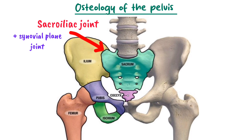The sacroiliac joint is held together by strong ligaments. The second landmark is the acetabulum, a deep concave structure that serves as the socket for the head of the femur, forming the ball and socket hip joint. The name acetabulum comes from Latin meaning 'vinegar cup.' In newborns, the acetabulum is formed by the ilium, ischium, and pubis, separated by the triradiate cartilage. Since cartilage does not appear on x-rays, it may look like a fracture in young children, but it is a normal finding — an important point for radiology students.